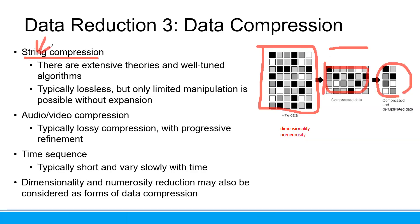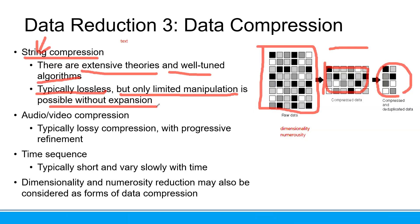In string data, we need to do this kind of compression. String means text data. There are extensive theories and algorithms for this. The first type is string compression. Another type of compression you can use is audio or video.